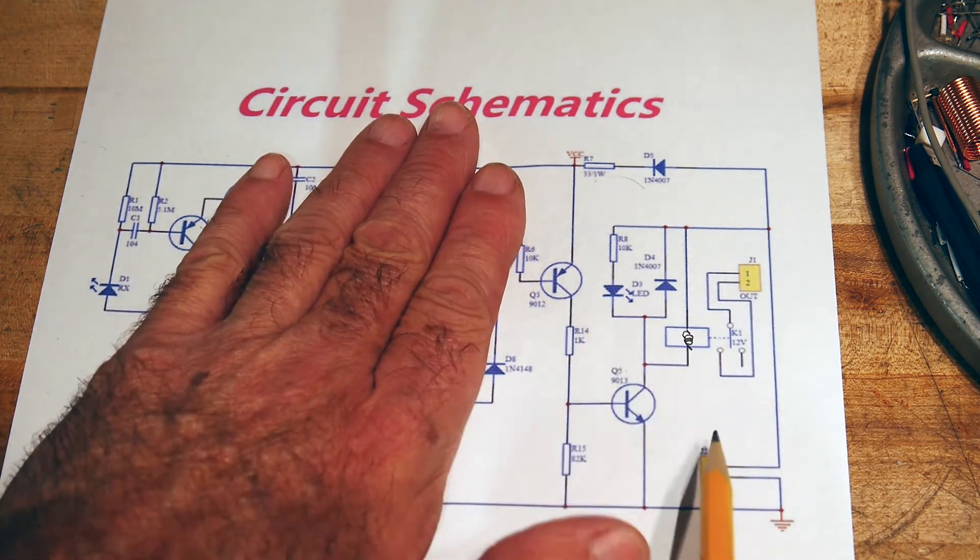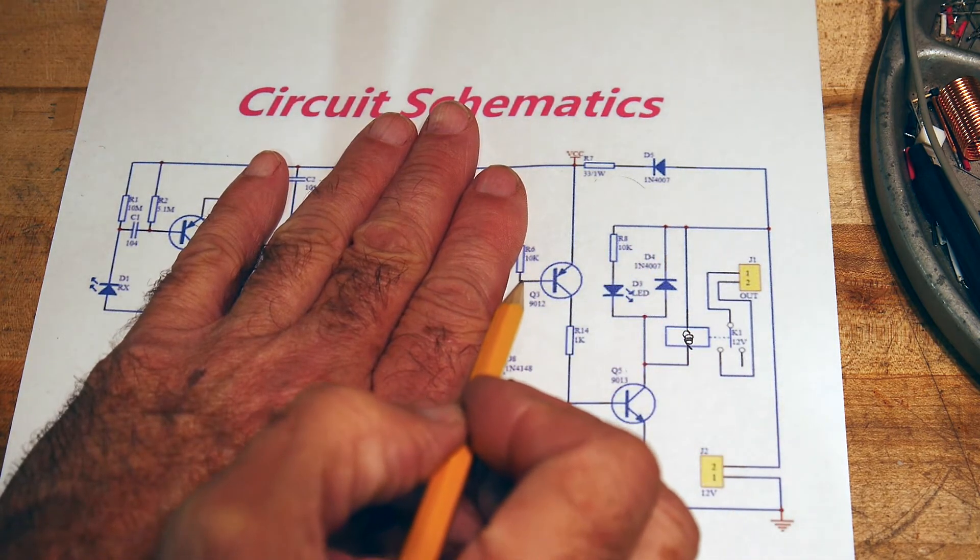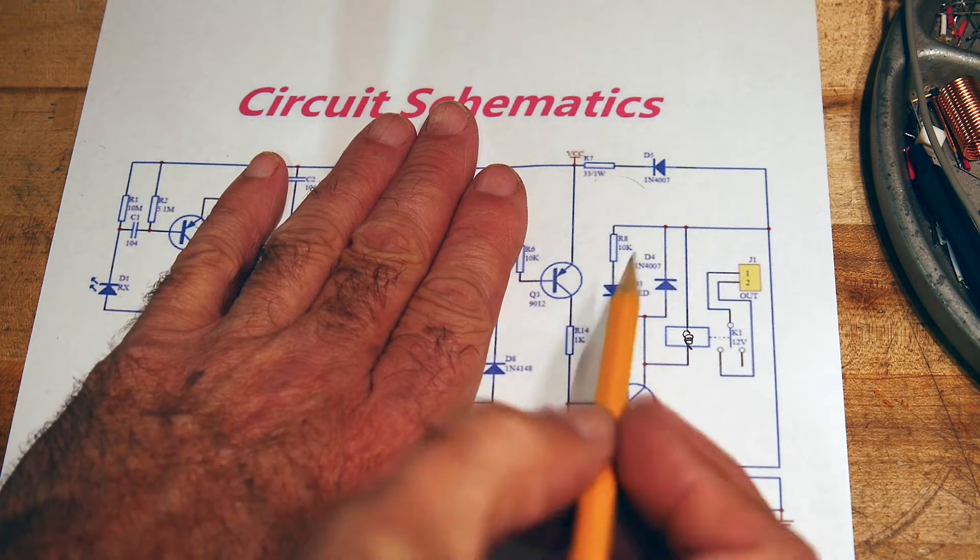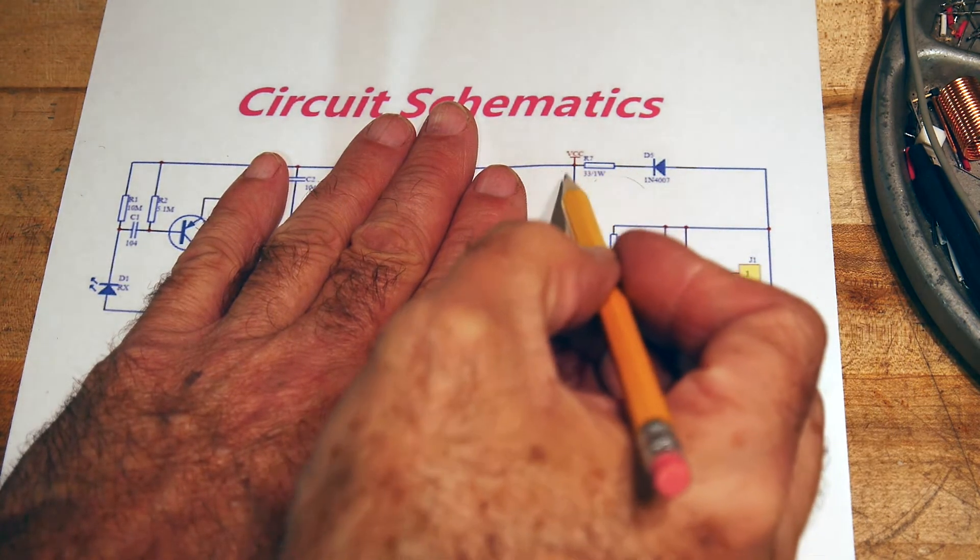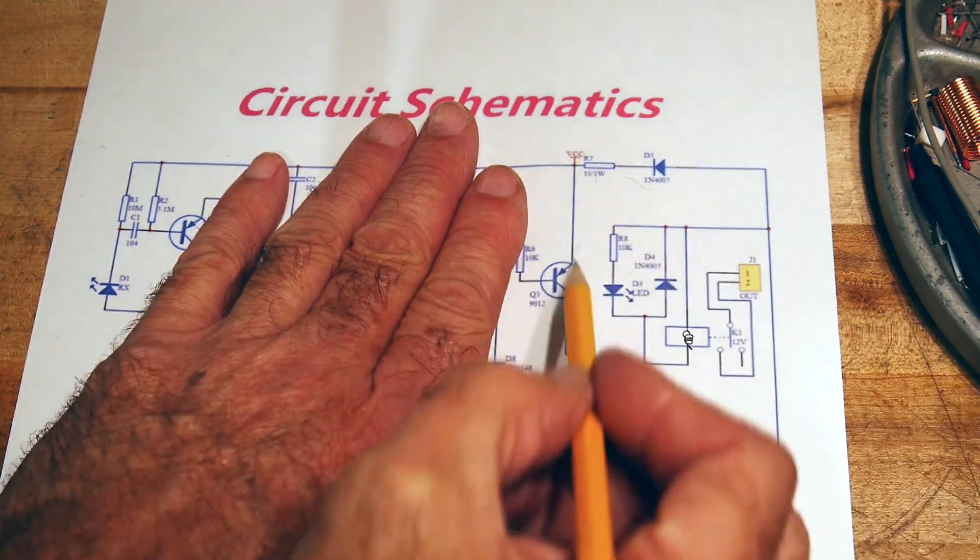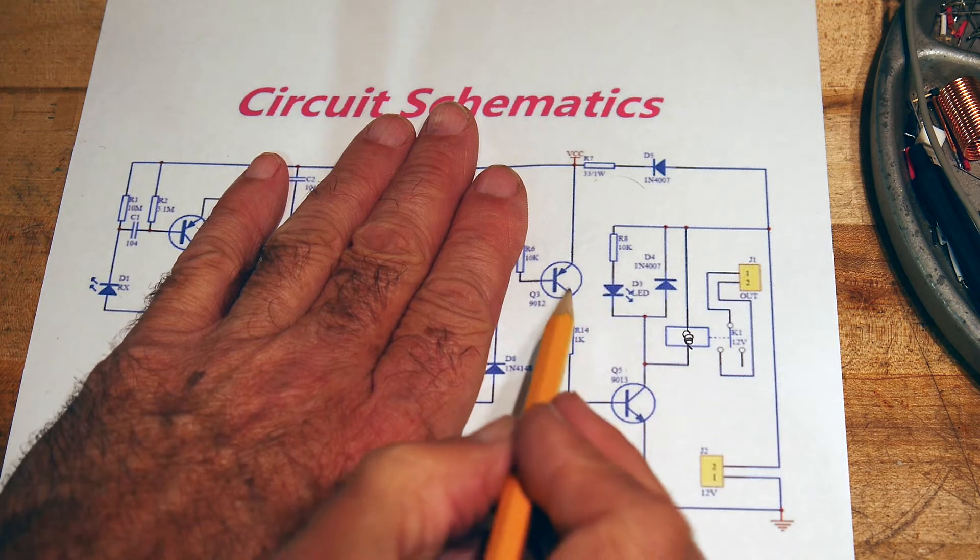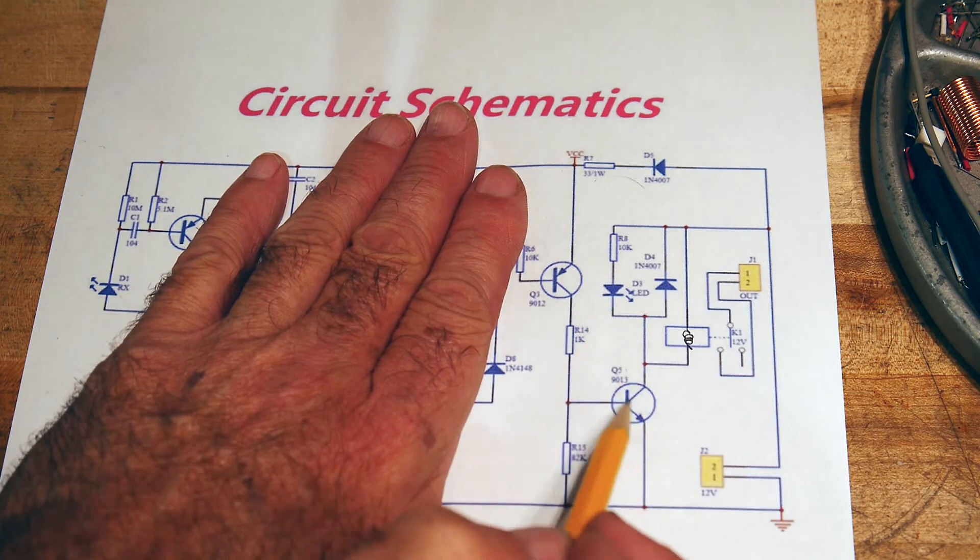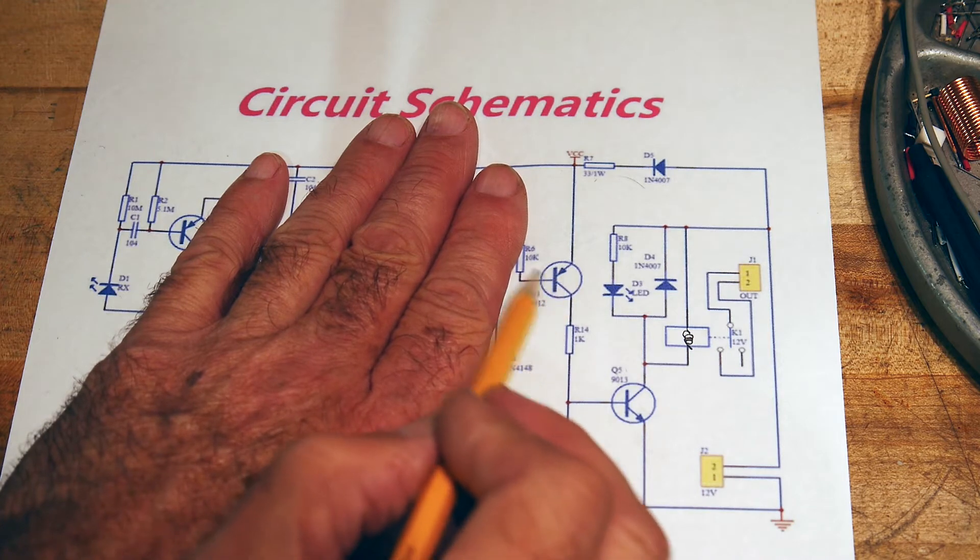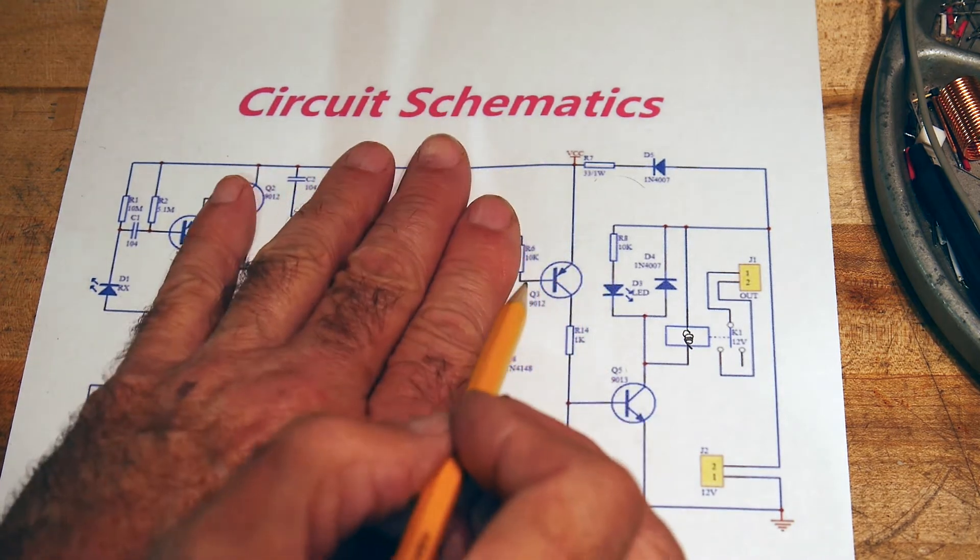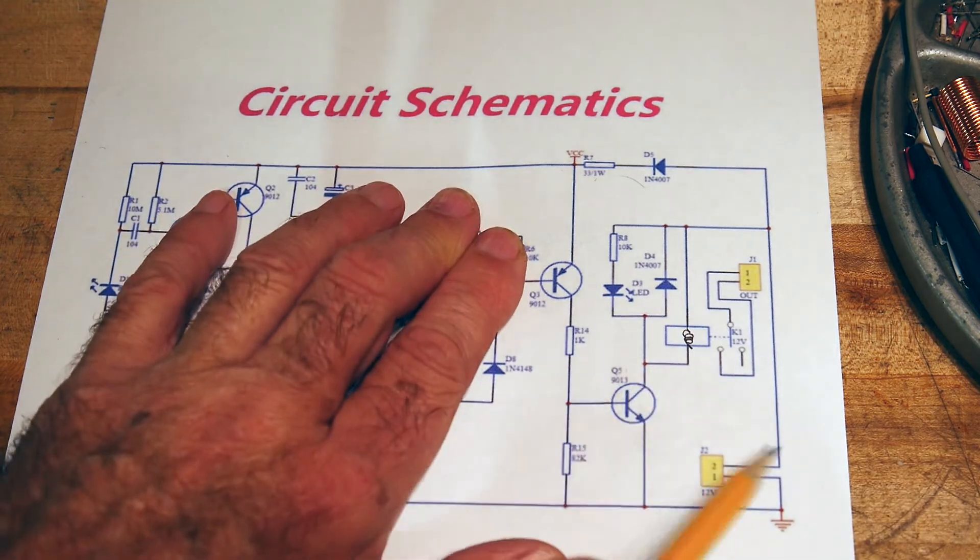We have another transistor. If we have a low signal on the base, this transistor will turn on. If this transistor turns on then it will allow voltage to come through it and turn on the NPN. So this is kind of like a Darlington, a PNP NPN. So a low signal on this side turns on the thing.